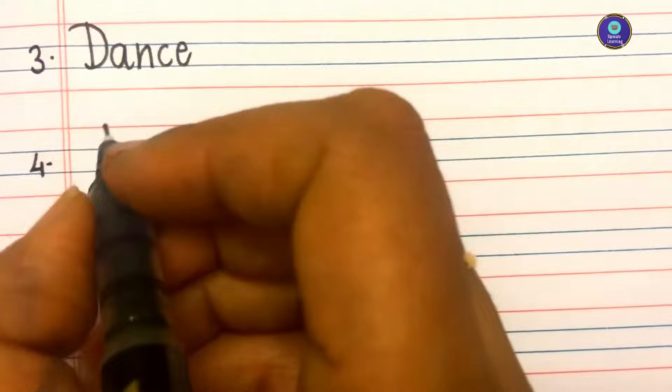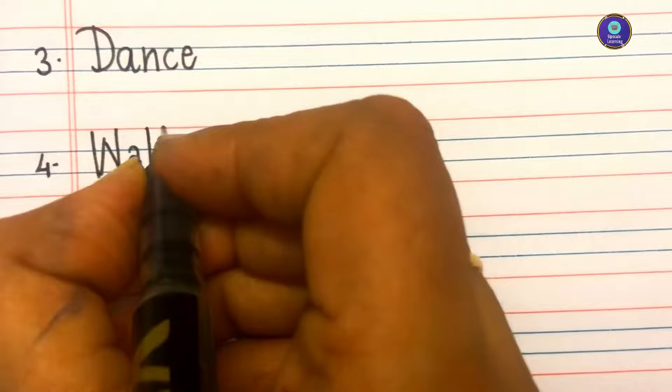Fourth one. W A L K walk. Fifth one. C R Y cry. Sixth one. C R A W L crawl.